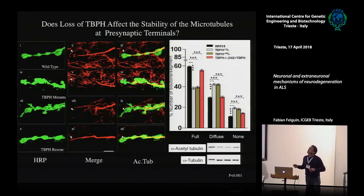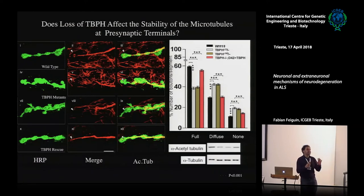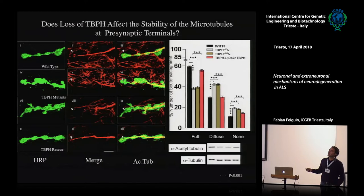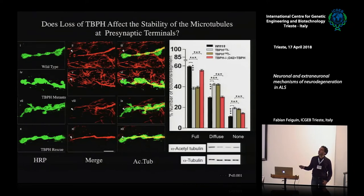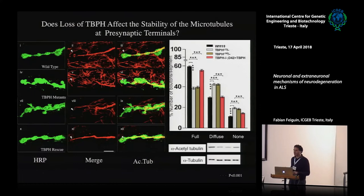What does this protein do? It stabilizes microtubules. The stabilization of microtubules is a major problem in neurodegenerative disease, especially in ALS — microtubules somehow become unstable and cannot keep the structure. We used acetylated tubulin antibody, since acetylated tubulin is a modification marking stable microtubules. We found that acetylated microtubules at the end of synaptic boutons are not present in mutants, but can be rescued. This was quantified.